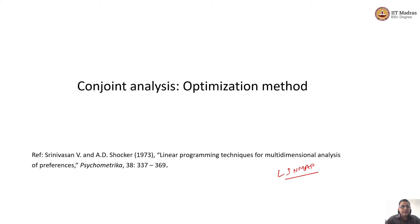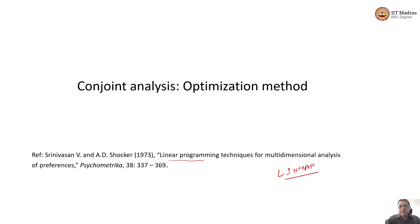Professor Srinivasan at the University of Rochester at that time, and Alan Chalker. The notations we are going to describe are essentially from this article. Let us get into what this optimization problem is — this is the simplistic, linear programming formulation of the conjoint analysis problem.